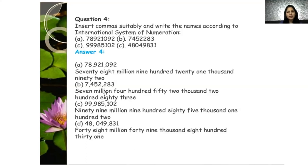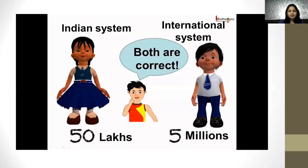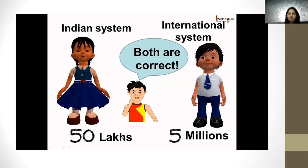Now we have learnt how to place commas in the Indian system and the International system, and how to write number names in both. In fifth form we worked with smaller numbers, but now we are dealing with larger numbers. For example, 50 lakh and 5 million are both correct representations of the same number, because 50 lakh has 6 zeros and 5 million also has 6 zeros. One is written in the Indian system and the other in the International system.